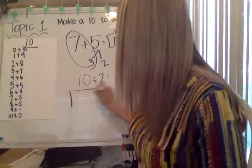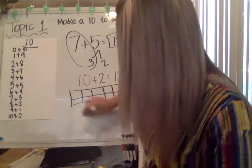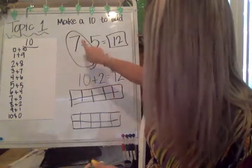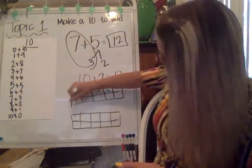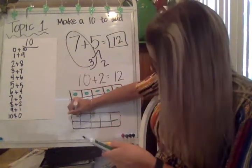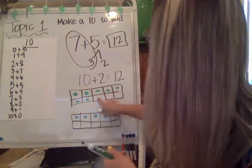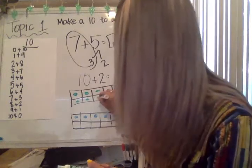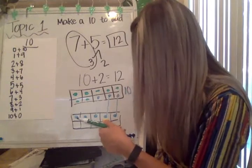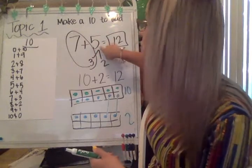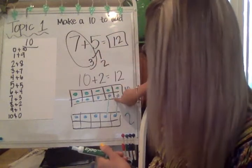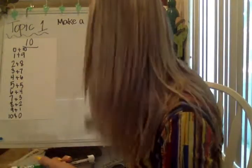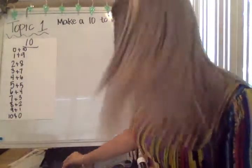Just to show you what that also looks like on a 10 frame: I'm going to draw in seven on the top and then five on the bottom — that's just going to be one row across. I look here and I see that it needs three more of those little dots to fill in — one, two, three — those are gone, filled in over here. That means this frame is full with 10, and the other one only has two left. Essentially I took those three, put them over here, and made them into the next 10.